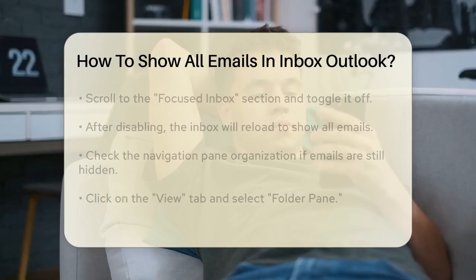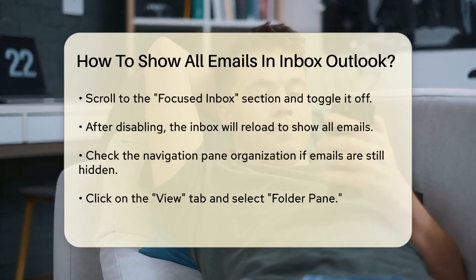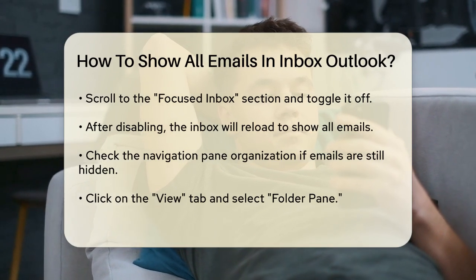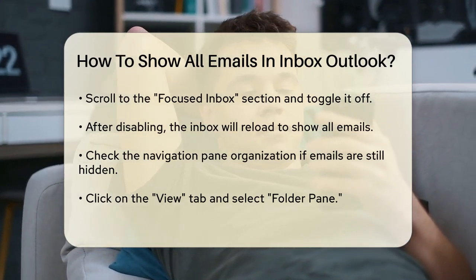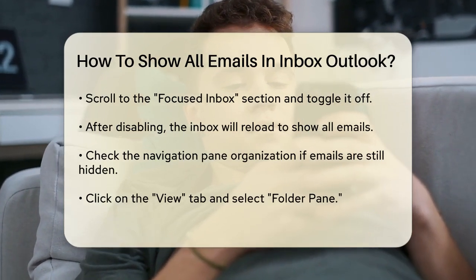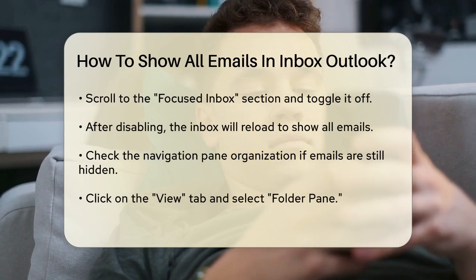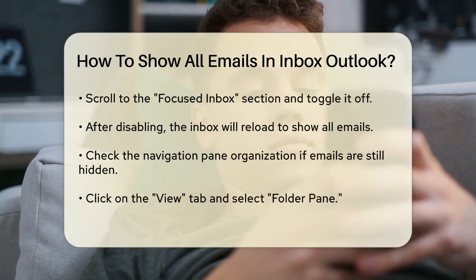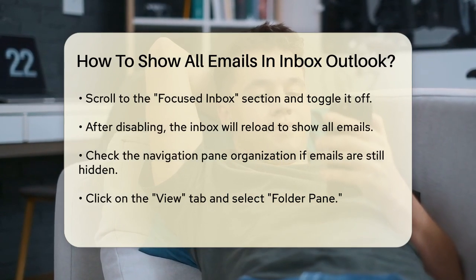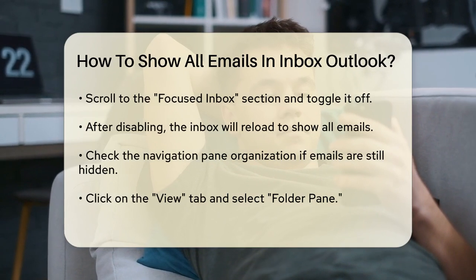To do this, go to the top right corner of your Outlook Inbox and click on the Gear icon. This opens the Quick Settings panel. Scroll down until you see the Focused Inbox section. By default, this is turned on. Simply click the toggle button to turn it off. Once you've turned off the Focused Inbox, your inbox will reload and you'll see all your emails in a single view. This way, you won't miss any important messages and you can easily navigate through all your emails without switching between different sections.